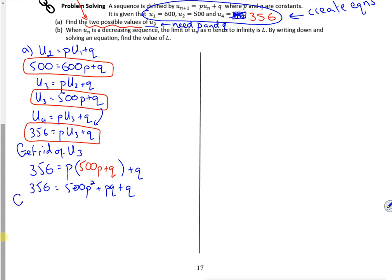So now then, let's get rid of q. I could have done this the other way and rearranged it to get rid of p. Give me the same answer, give me the right answer. So how can I get rid of q? So I can get rid of q by rearranging this one. So 500 minus 600p is q.